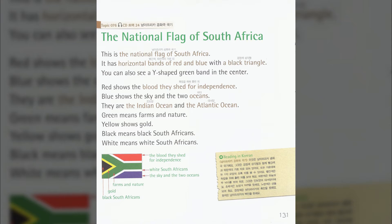Green means farms and nature. The yellow shows gold. Black means black South Africans. White means white South Africans.